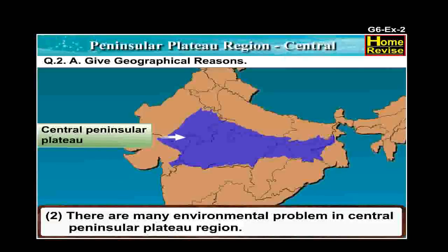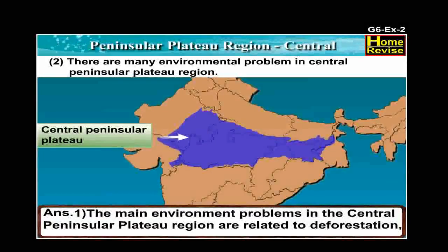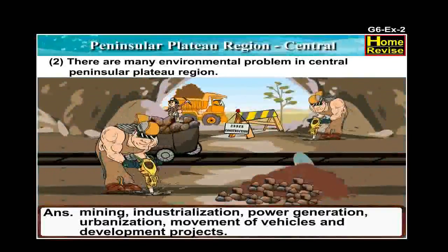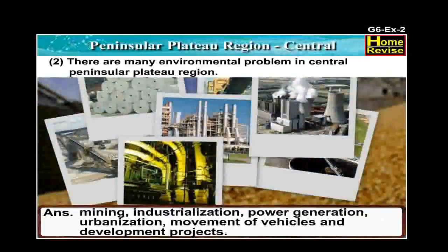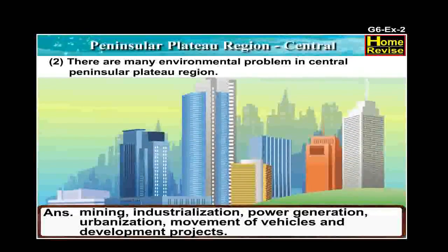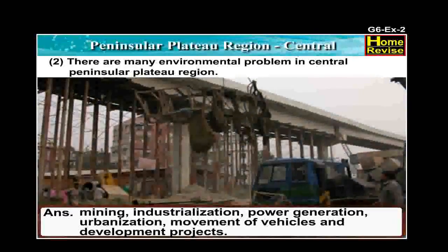Number 2: There are many environmental problems in central peninsula plateau region. The answer is: The main environmental problems in the central peninsula plateau region are related to deforestation, mining, industrialization, power generation, urbanization, movement of vehicles and development projects.